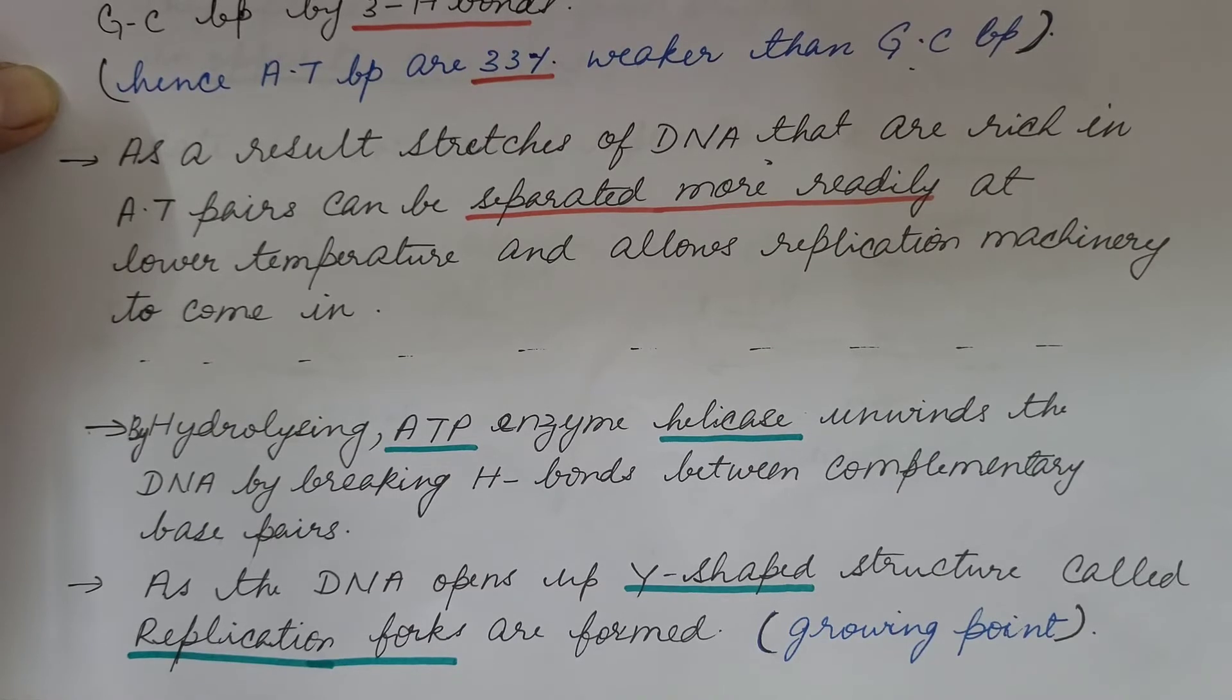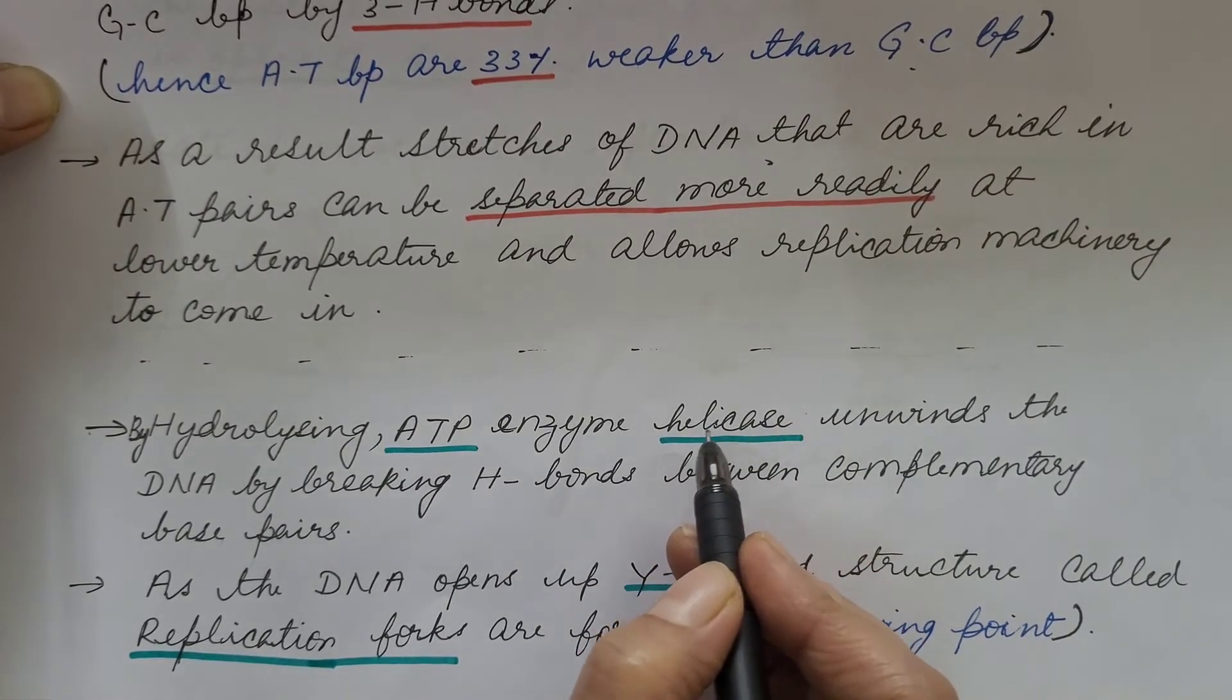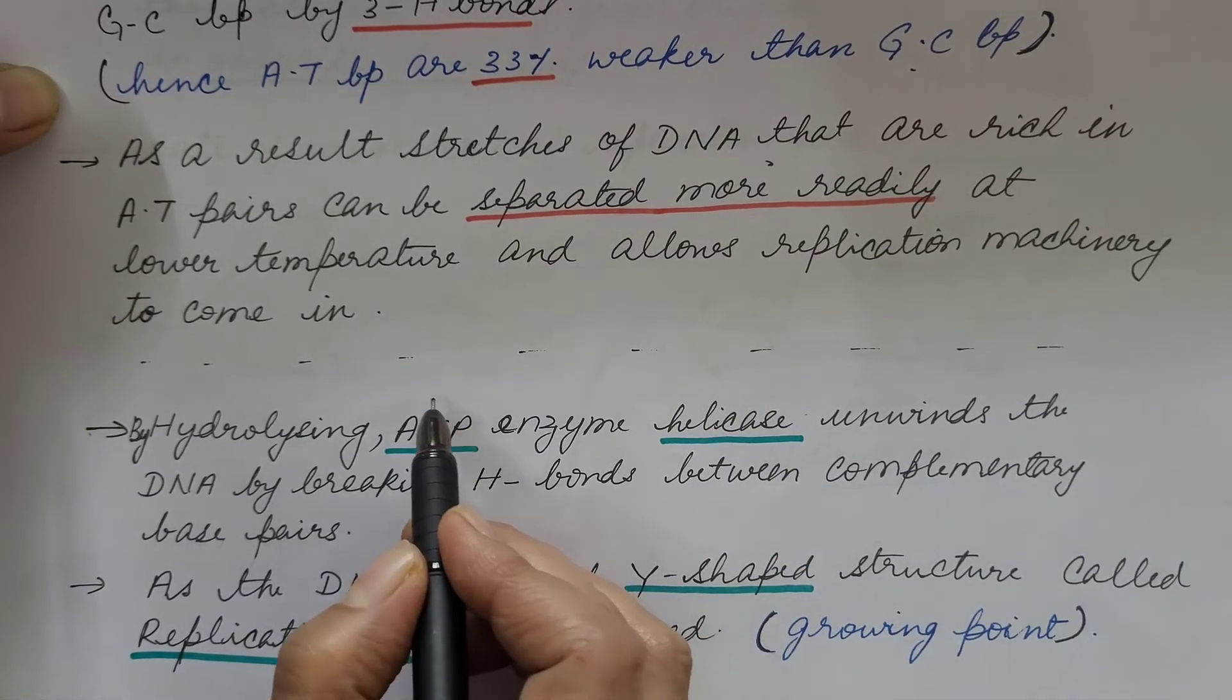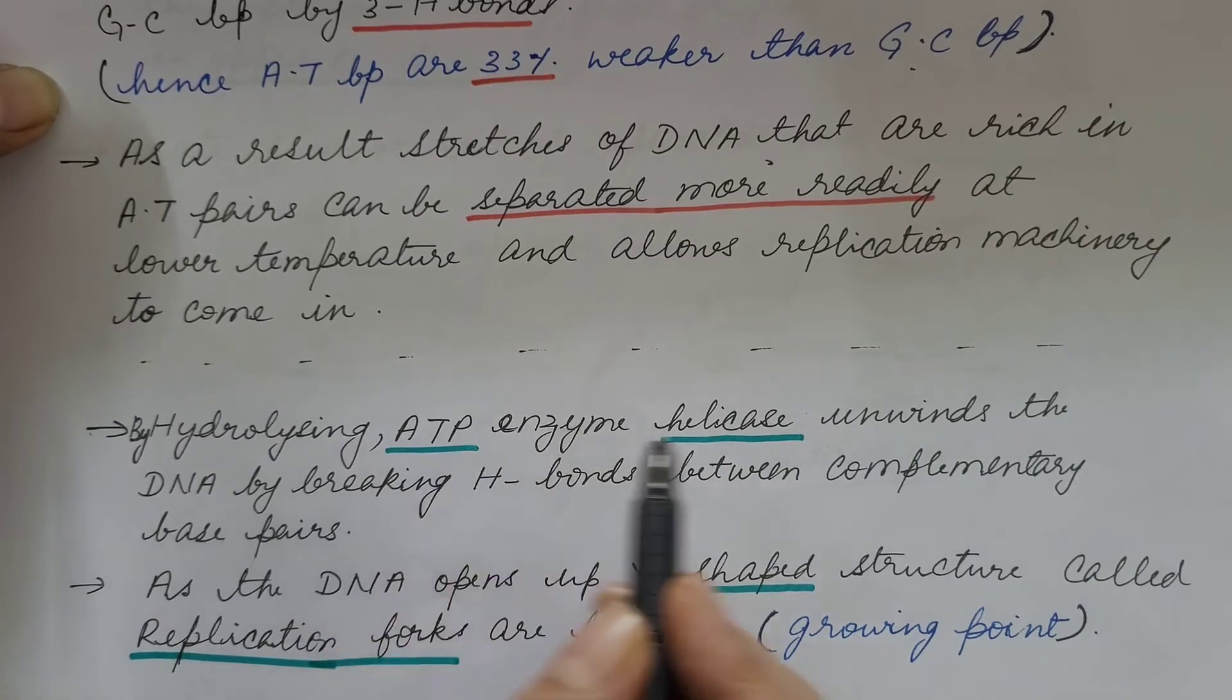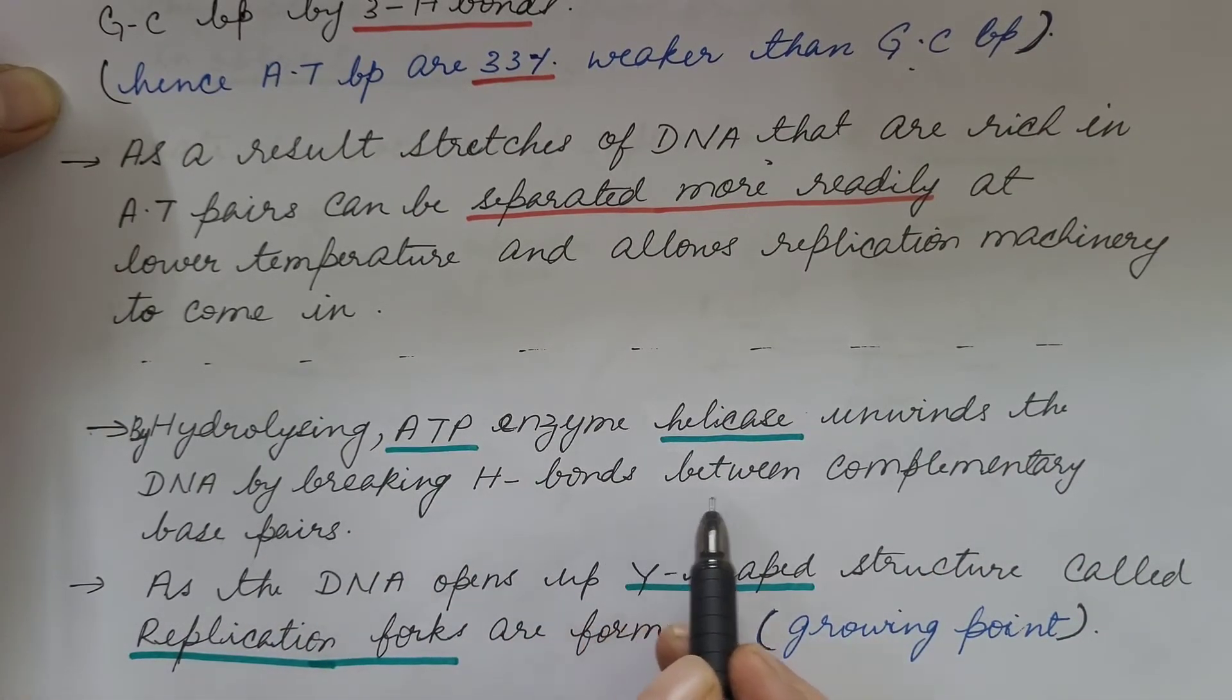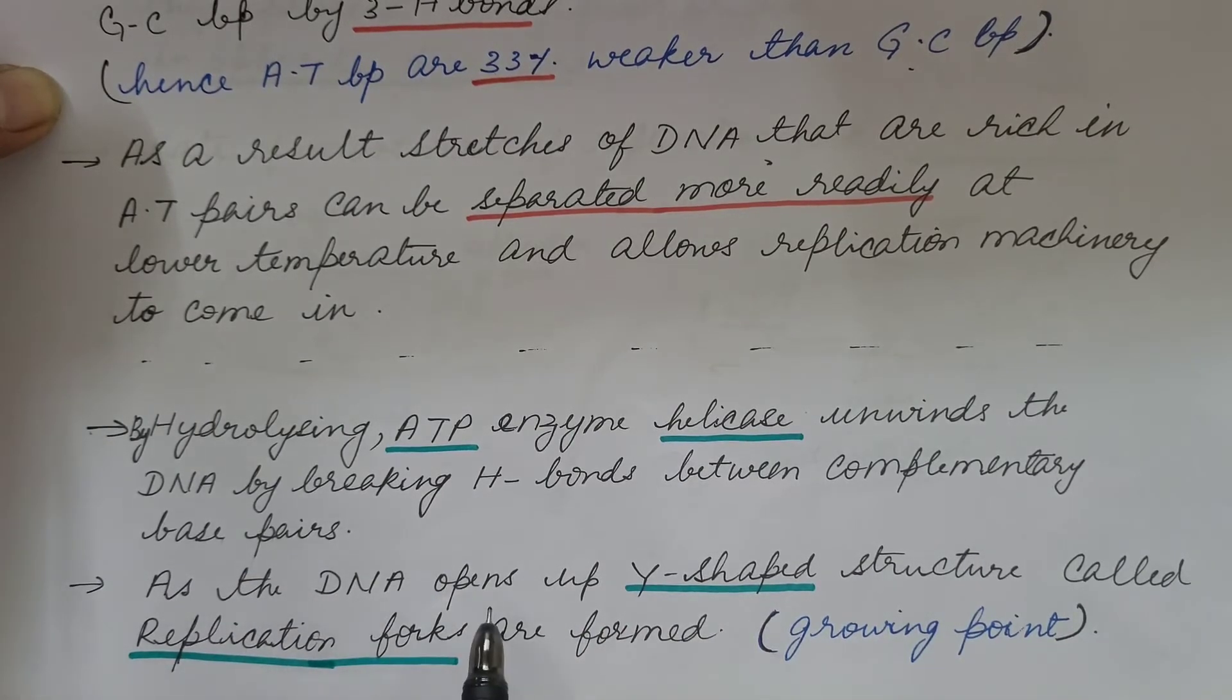further unwinding of the double helix of DNA takes place by helicase enzyme and this enzyme uses energy which is obtained by hydrolysis of ATP. It unwinds the DNA by breaking hydrogen bonds between complementary base pairs.